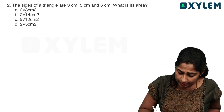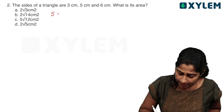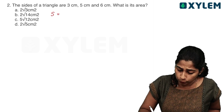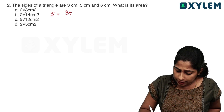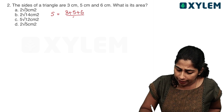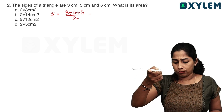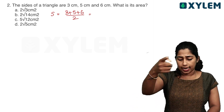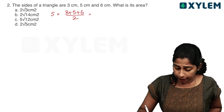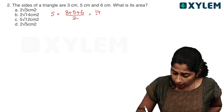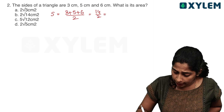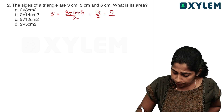We can easily find S. S is equal to 3 plus 5 plus 6 divided by 2. That is 5 plus 3 equals 8, 8 plus 6 equals 14, divided by 2 equals 7. So S equals 7.